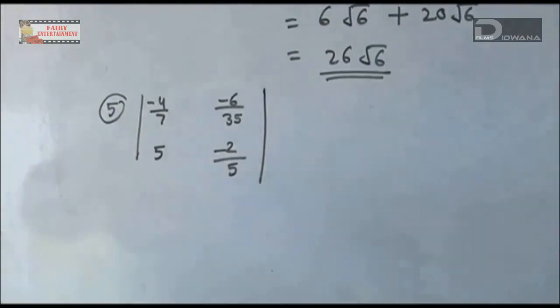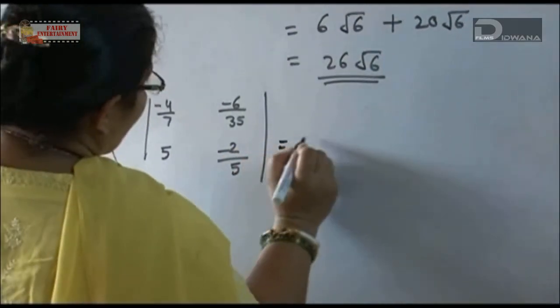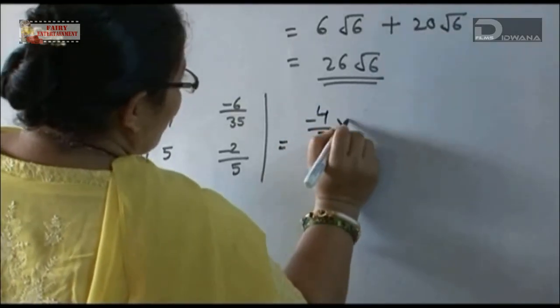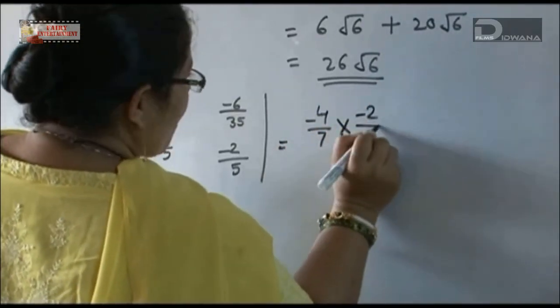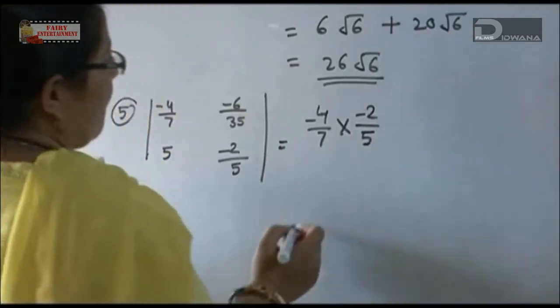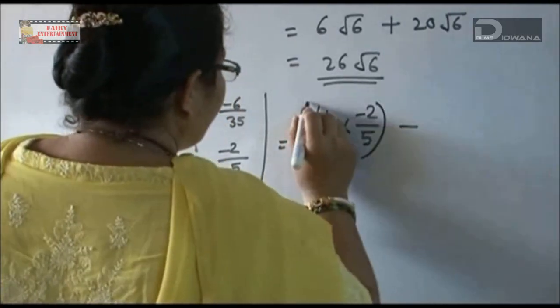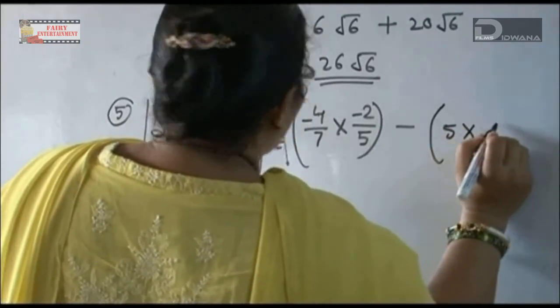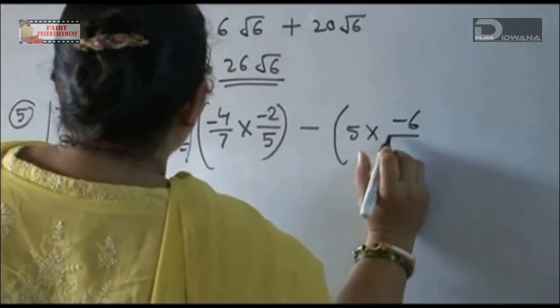Here, we will multiply both equations. -4/7 into -2/5 minus 5 multiply by -6/35.